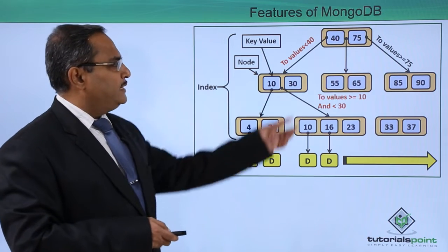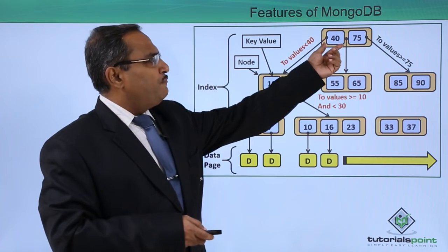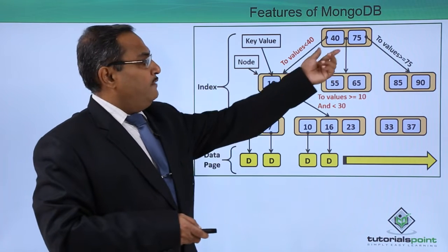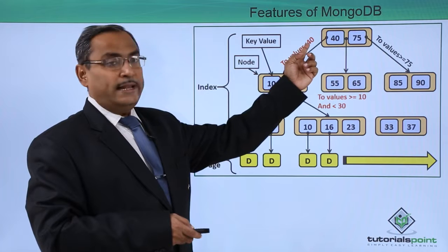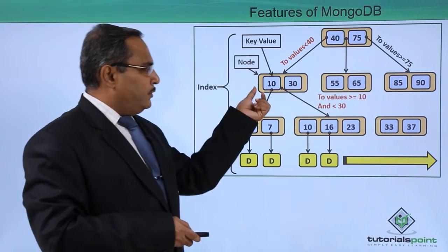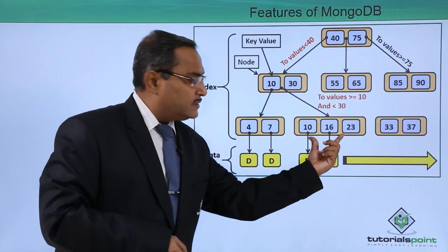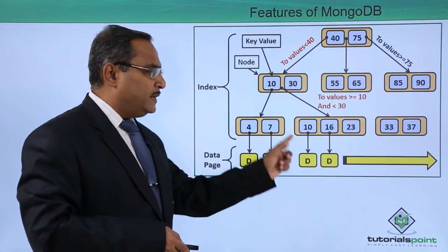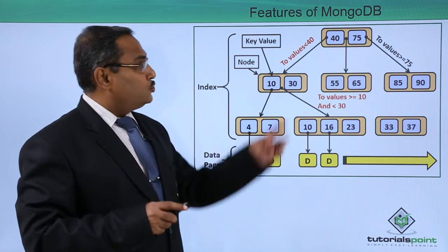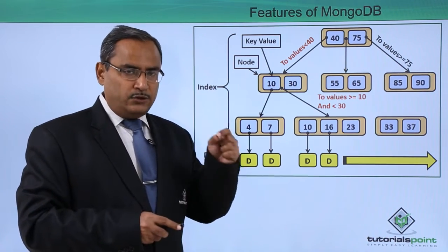Consider this indexing diagram with nodes and key values. If a key's value is less than 40, we go to one particular node; if it is between 40 and 75, we search in another node. Keys with values less than 10 are searched in one leaf node, and those between 10 and 30 in another. In MongoDB, data is stored in documents as key-value pairs, and these keys are represented in a hierarchical structure so we can easily retrieve data by searching on key values.